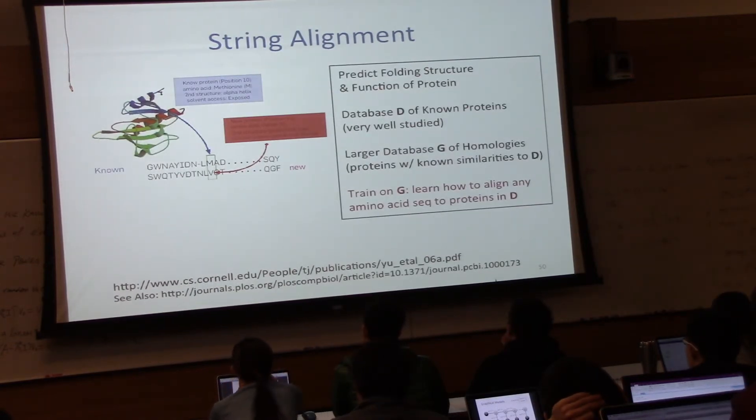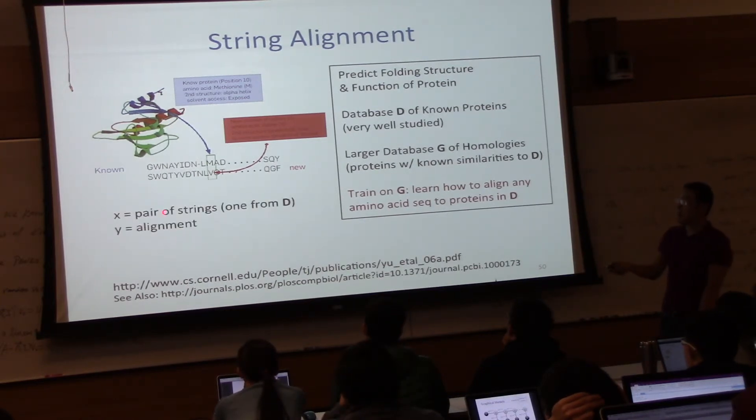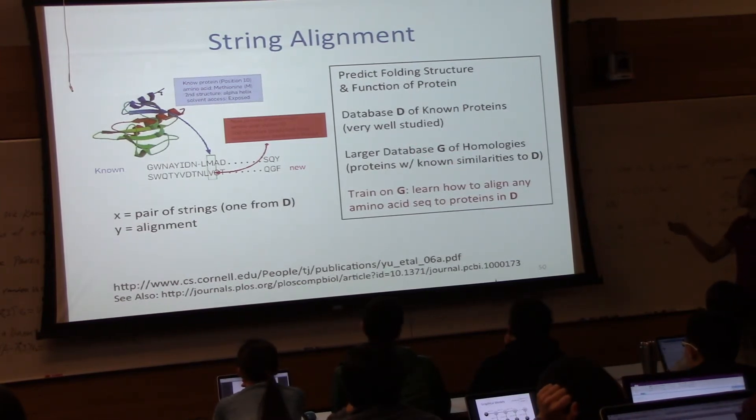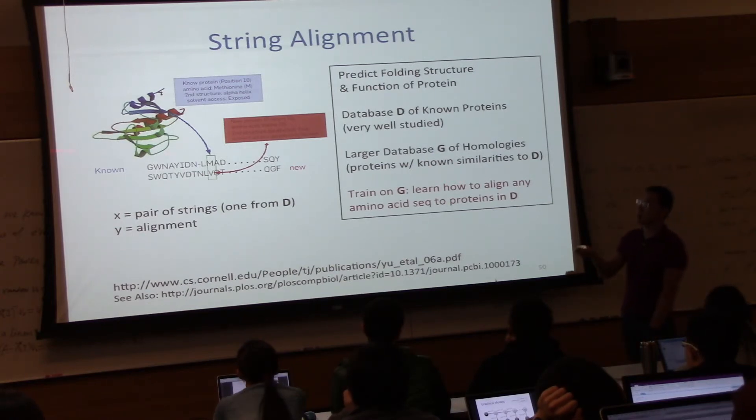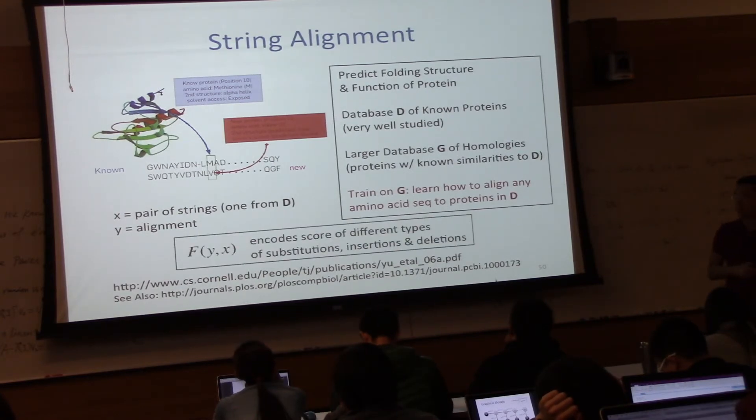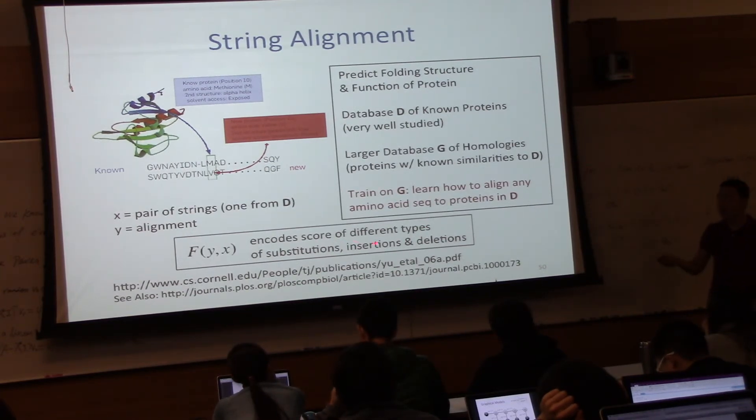String alignment is another thing you can do with these graphical models. So now F is a scoring function. X is a pair of strings, and then Y is an alignment. So this was used, for example, in predicting the folding structure and function of proteins where you have a database of well-known proteins. And now we have a larger database of proteins that are similar to the database of well-studied proteins. And then one way to predict the folding structure of this larger database of proteins is to try to align it to one of the similar proteins in the presence of insertions and deletions and shifts and stuff like that. So you can also model this as a structural prediction problem with a linear scoring rule. So it encodes different types of substitutions, insertions, deletions. So if you do this and if these scores are non-negative, you maximize this to find the best fit. If they're positive, you actually want to minimize this to find the most cost to match with X and D.